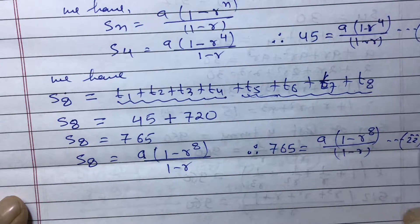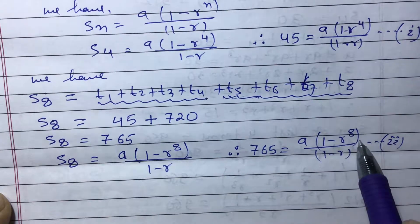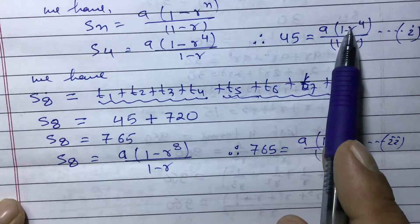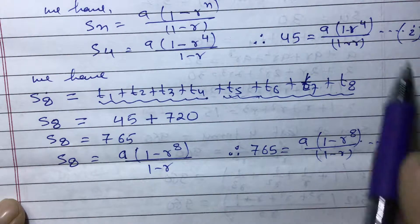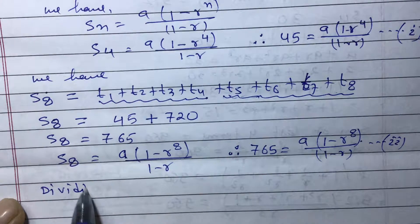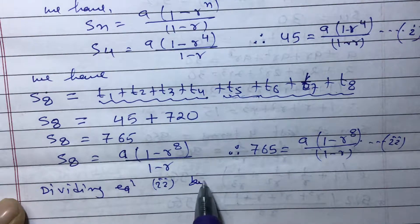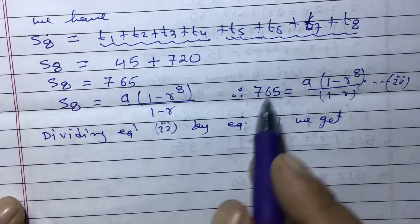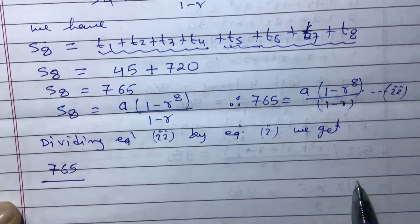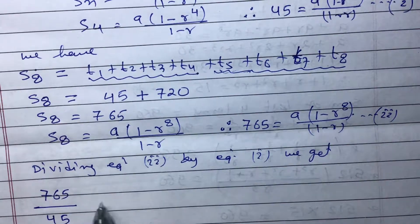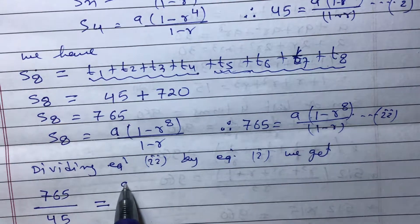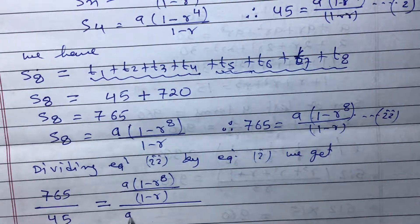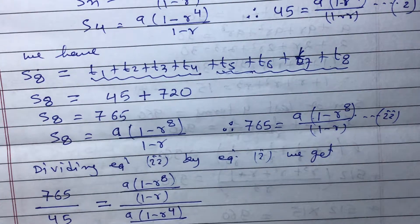Now let us solve equation 1 and equation 2 to get the value of a and r. Since a and r appear in product form, we always divide one equation by another. Dividing equation 2 by equation 1: 765/45 = [a(1 − r⁸)/(1 − r)] / [a(1 − r⁴)/(1 − r)].